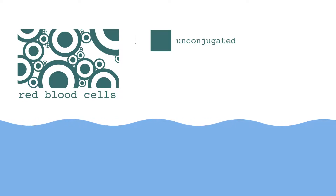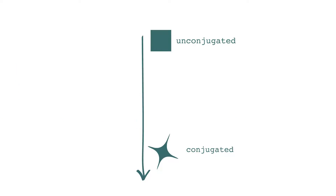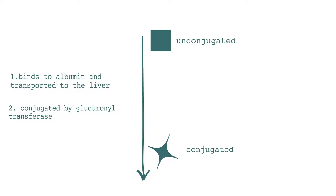This conversion from lipid to water-soluble occurs in two steps. First of all, the unconjugated bilirubin binds to albumin, which carries it to the liver. Here, it is conjugated by an enzyme called glucuronyl transferase. Anything that interferes with enzyme efficacy will therefore impair the liver's ability to conjugate bilirubin.